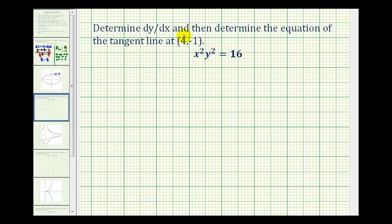We want to determine dy/dx and then the equation of the tangent line at the point (4, -1). Our equation is x squared times y squared equals 16. This is an implicit equation because it's not solved for y. So we'll have to perform implicit differentiation to determine dy/dx.